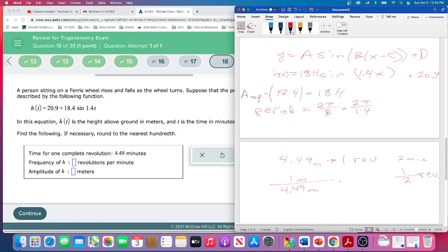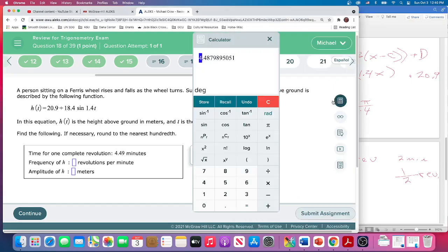Okay. So this is going to give us one divided by 4.49. One divided by 4.49. So it's 0.2222 and it only wants to the nearest hundredth. So 0.22, two revolutions per minute.